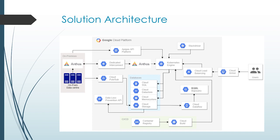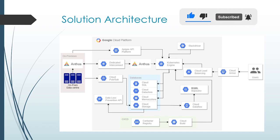We can use Apigee API Platform for API-based integrations and Cloud Operations (formerly Stackdriver) for centralized visibility and monitoring. When users approach, we can use Cloud Armor for protection and Cloud Load Balancing to distribute load across regions. For the CI/CD pipeline, we can use Cloud Source Repositories, store images in Container Registry, use Cloud Build to build the images, and then deploy through Kubernetes Engine.